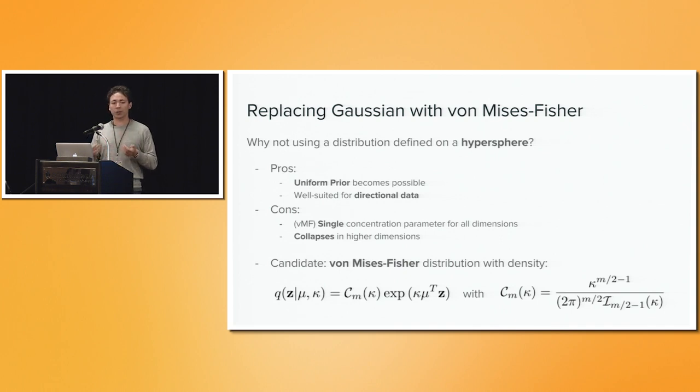One candidate for a hyperspherical distribution is a von Mises-Fisher. A von Mises-Fisher is often called the Gaussian of a hypersphere, where you have two parameters. You have the kappa, which is the concentration, similar to the variance. You have a mean direction, which is no longer the origin, but it's the direction on this sphere. Another con here comes into play that has to be noted that for a von Mises-Fisher, this concentration parameter is a scalar. So it's not unique for every dimension, but it's the same for all dimensions.